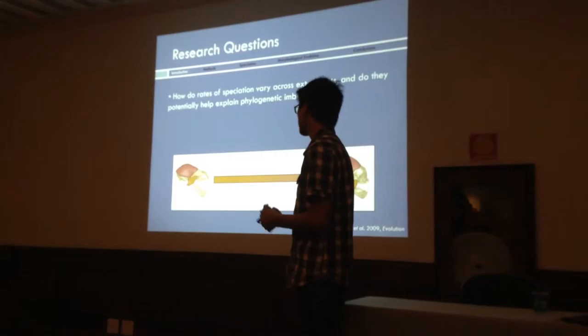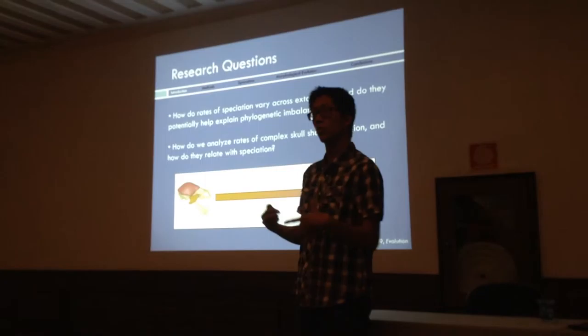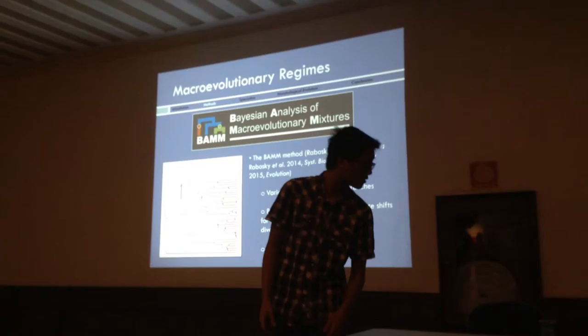So my research questions for this talk specifically are: How do rates of speciation vary across extant bats? And do any variations in speciation rates explain the phylogenetic imbalance that we see among extant clades? Second, how do we actually quantify rates of complex skull-shaped evolution? Skull is a complex biological, three-dimensional structure. And do these rates relate to speciation rates at all?